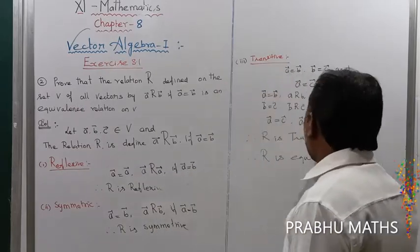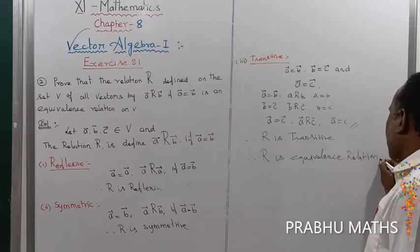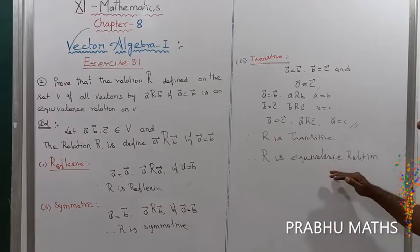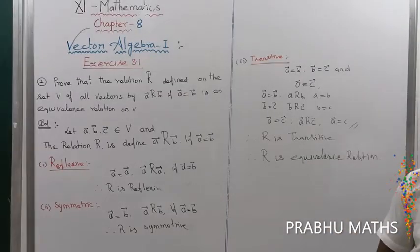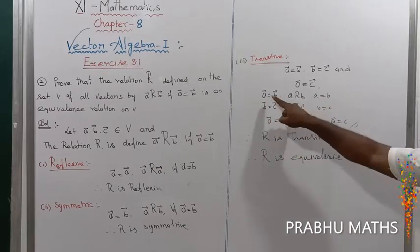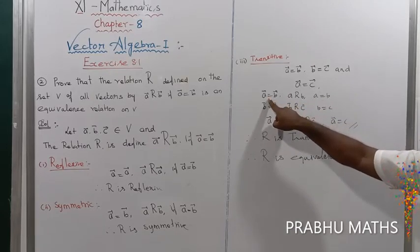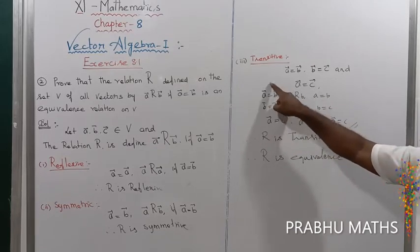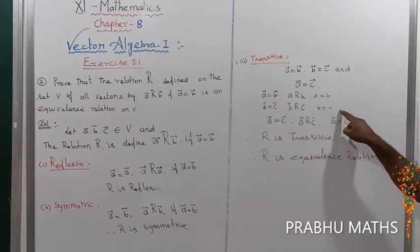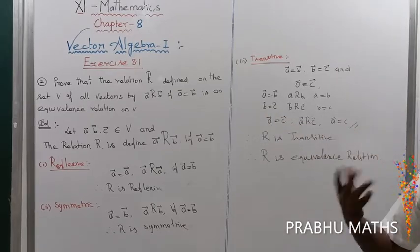A is equal to C, so A is related to C. Therefore R is transitive. Therefore R is an equivalence relation — that is called an equal relation. This was discussed in the first chapter. The condition is satisfied.